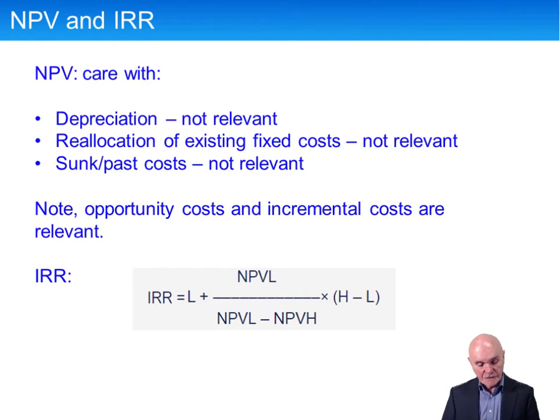And the alternative to net present value is internal rate of return. And remember, to work out internal rate of return, you have to work out at two different discount rates, you have to work out the net present value. So here is the approximation to the internal rate of return. Remember, internal rate of return is normally interpolated, it's going to be a bit of an approximation.